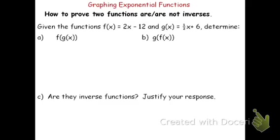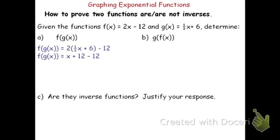Now I've got two functions: the original function f(x) = 2x − 12, and a second function g(x) = ½x + 6. We're going to determine f(g(x)) first. When you see f(g(x)), it means you're taking g(x) and substituting it into f(x). We take ½x + 6 and substitute it into f. Distributing: 2 times ½x is 1x, and 2 times 6 is 12. We're left with x + 12 − 12. The 12 and negative 12 cancel, and f(g(x)) = x.